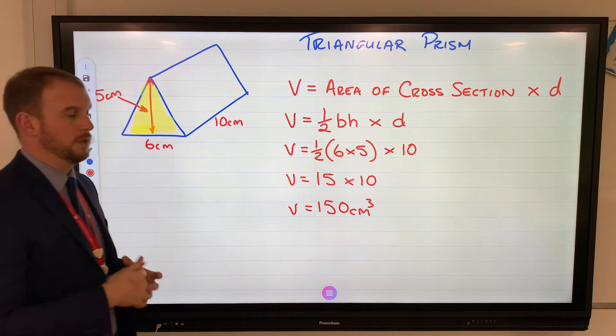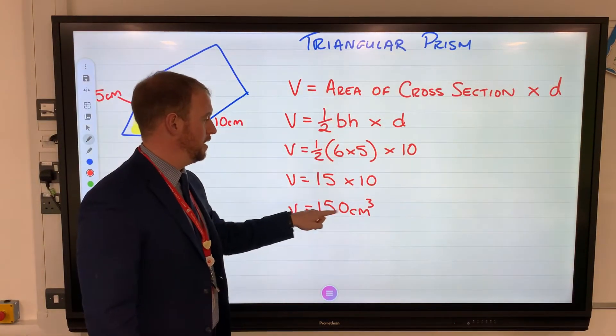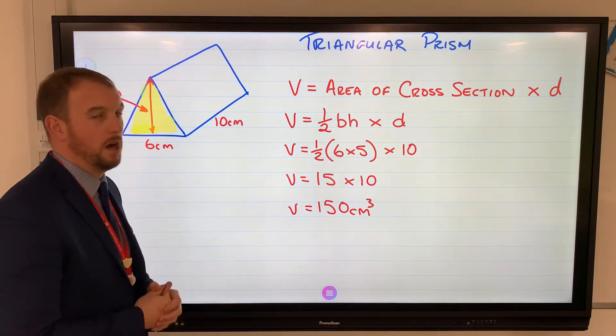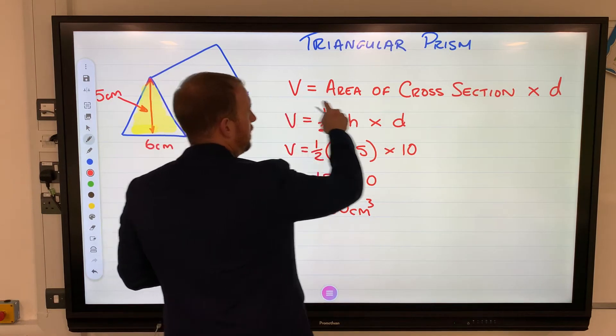Cubed again. Formula, substitution, answer, units. Equal signs are all in line. Using this formula, we could use that with any prism, so I'm now going to use that with this cylinder.